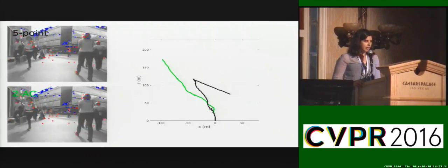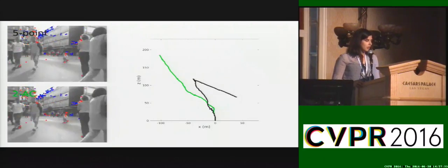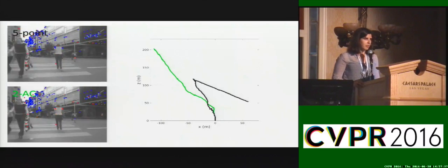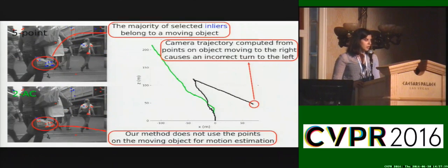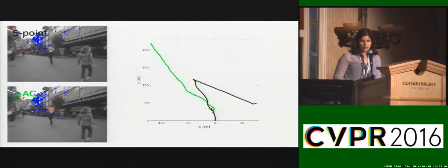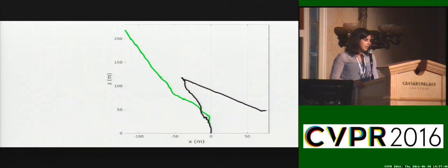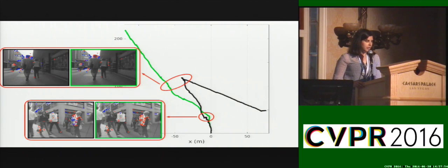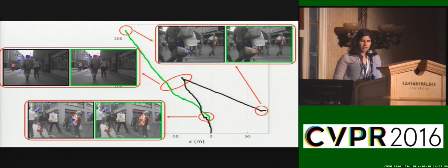In the next case, there are very few correspondences on the rigid background and so the majority of inliers selected by the five-point method belong to a moving object. This causes the black trajectory to make an incorrect turn to the left. To summarize, our method provides a plausible trajectory shown in green, whereas the five-point algorithm yields an impossible trajectory. The fact that our method is much more robust to dynamic foreground evidences the clear advantage of decreasing the combinatorics of the problem.